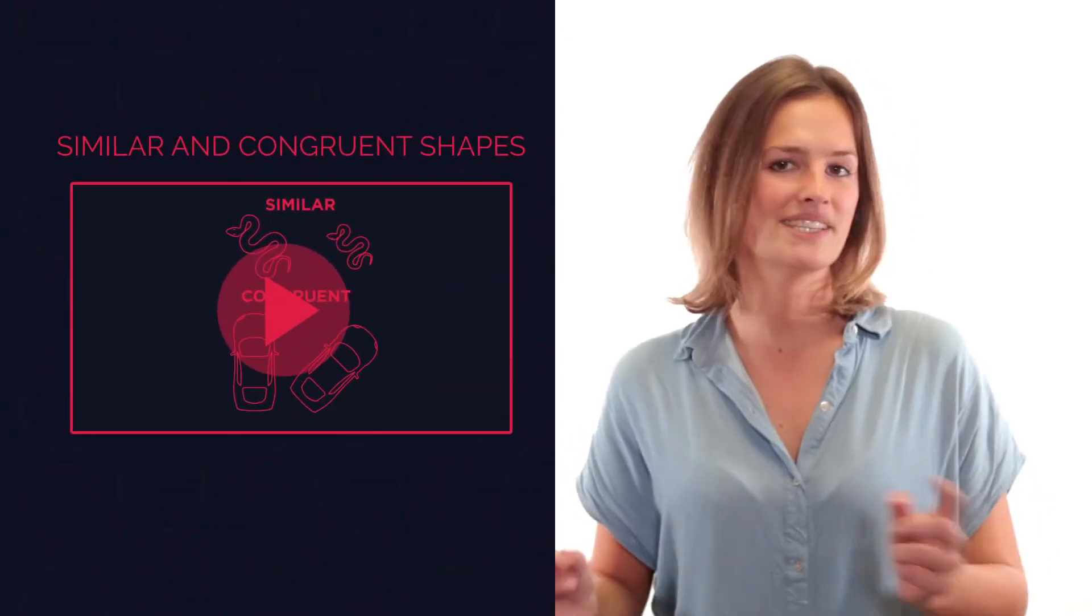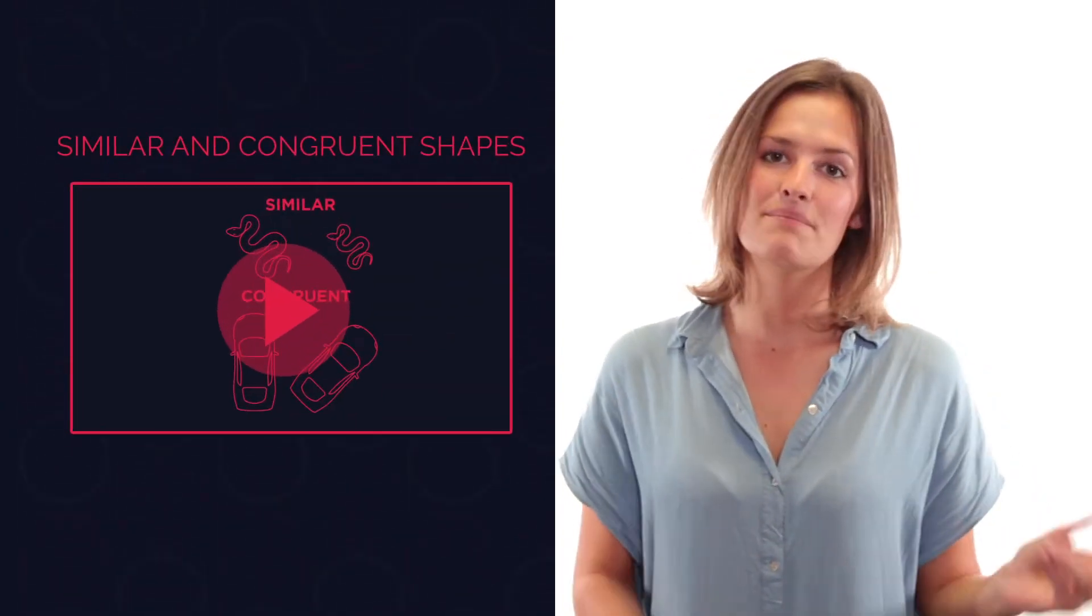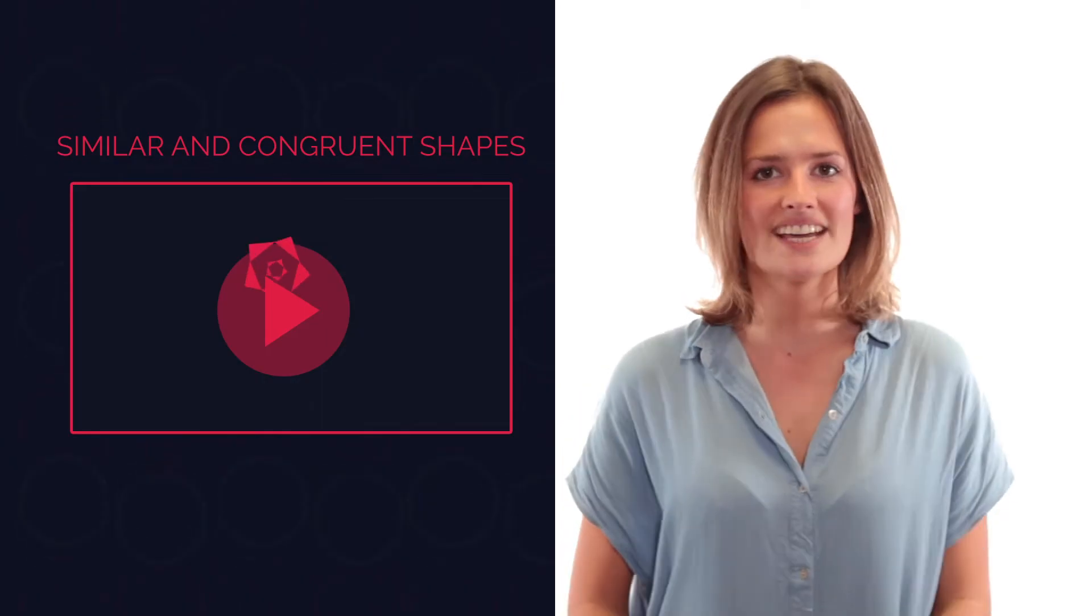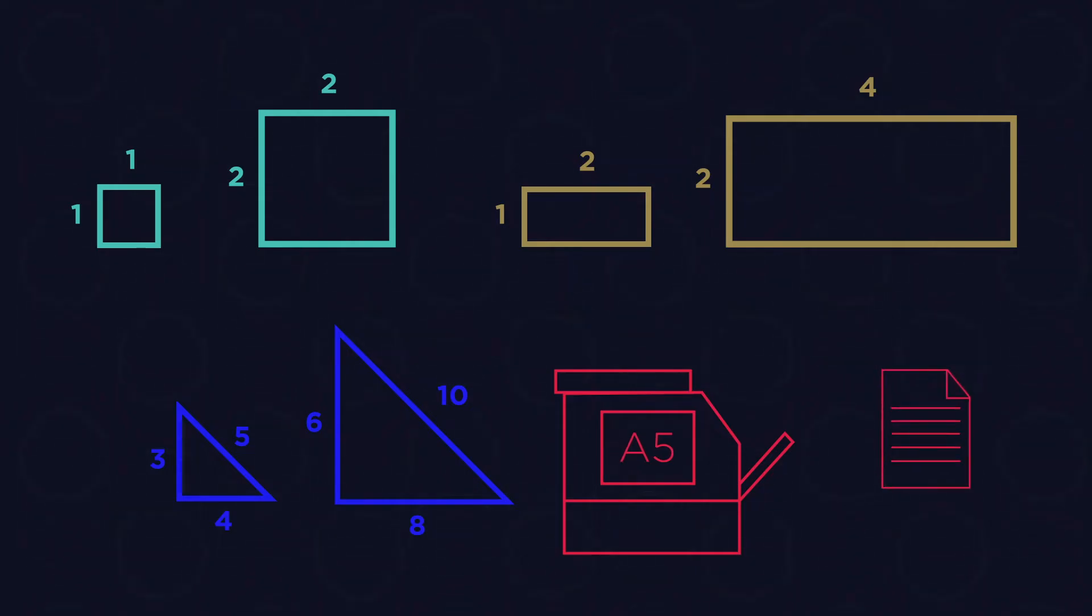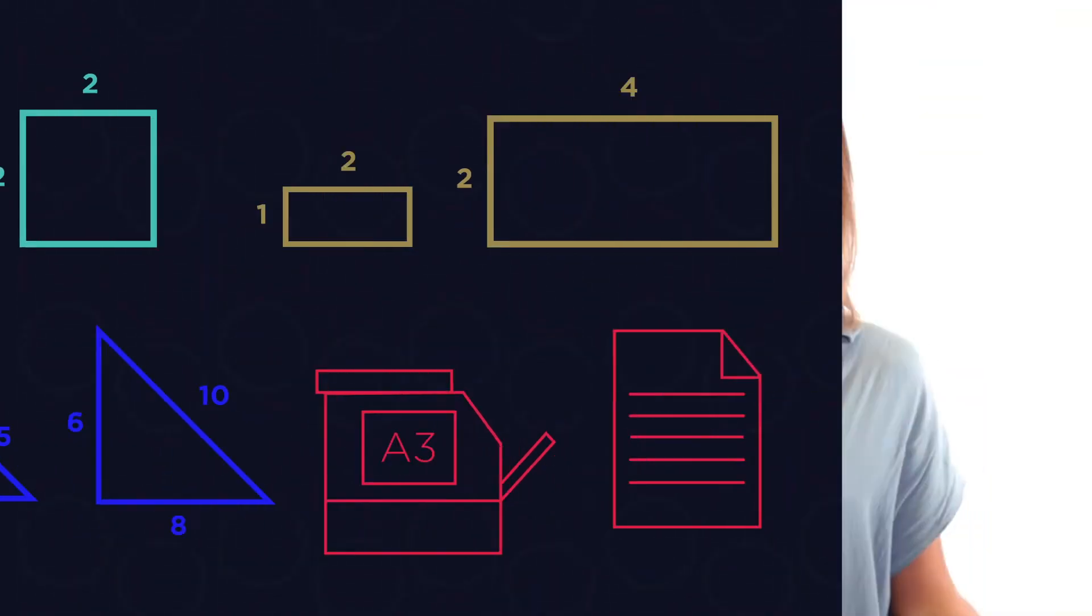In this video we're going to look at similar shapes. You should already know the difference between similar and congruent, but if you've forgotten you may want to watch this video first. Similar shapes are the exact same shape but may be different sizes, like a photocopier can increase the size of a page from A5 to A3. Knowing that shapes are similar can make calculating lengths and angles much easier.